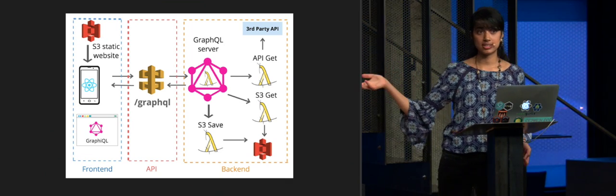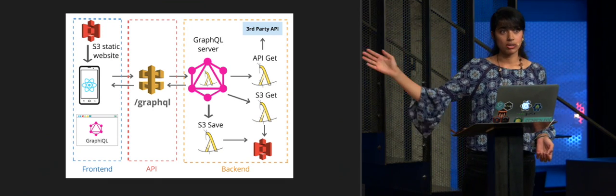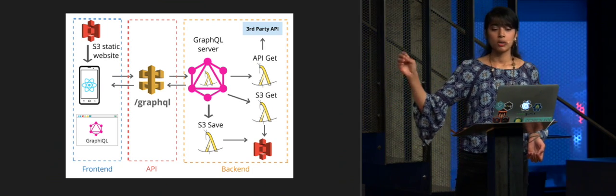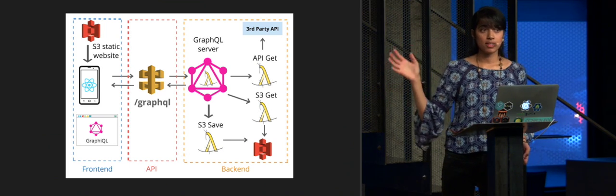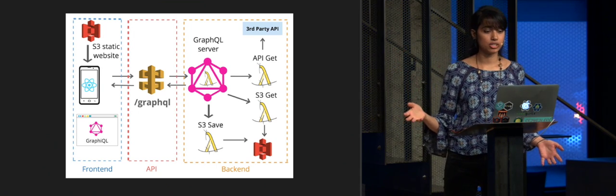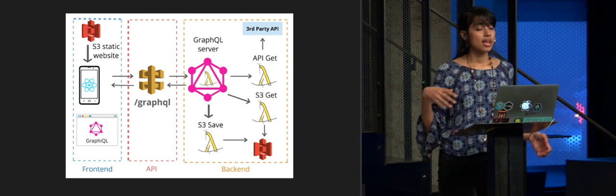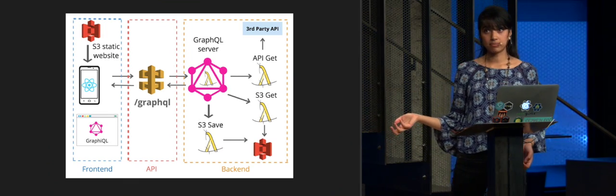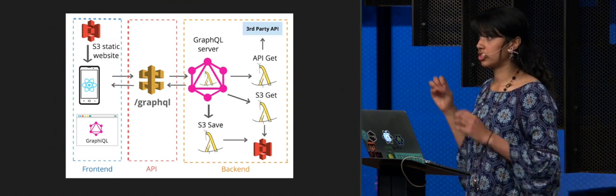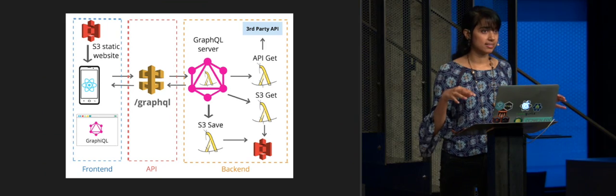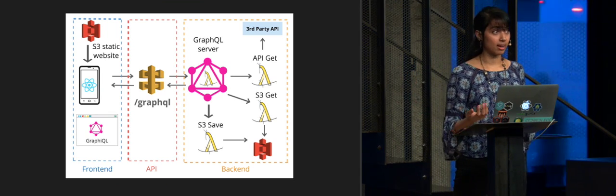The UI is again just a static S3 website, for which I used React. This makes requests to the single endpoint on the API Gateway — slash GraphQL — which maps to a GraphQL Lambda function, and this is the API facade. There are multiple other microservices that this Lambda function can delegate to: a microservice which gets songs from a third-party API, another which saves songs to an S3 bucket, and another Lambda function which retrieves songs from an S3 bucket. The GraphQL Lambda function delegates the data fetching to the other microservices based on what's requested by the client in the query.